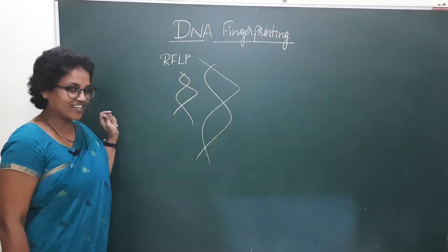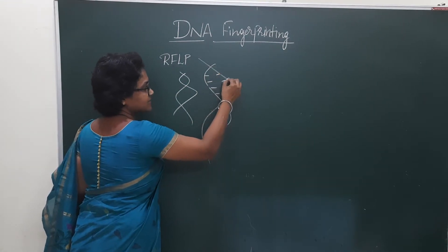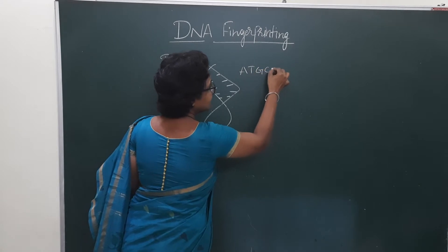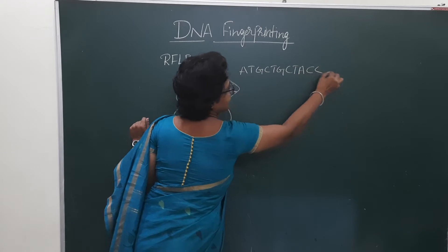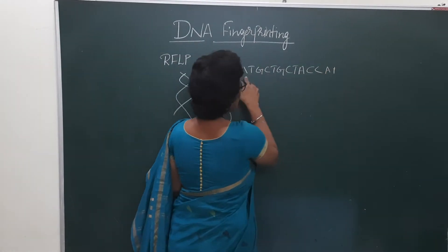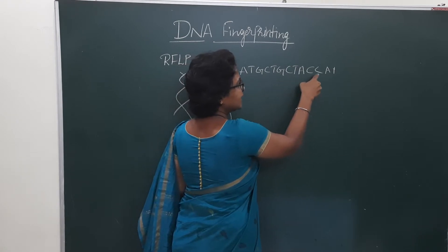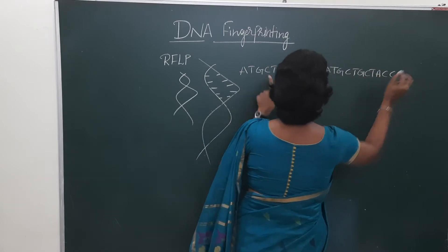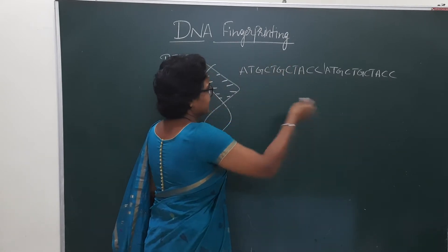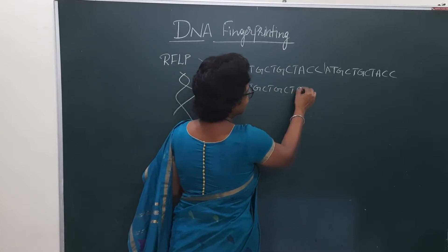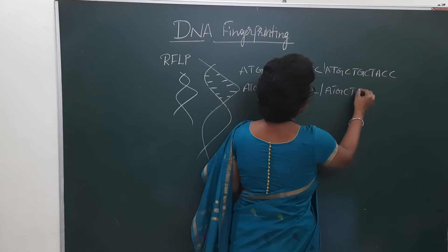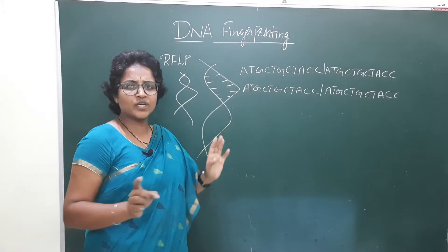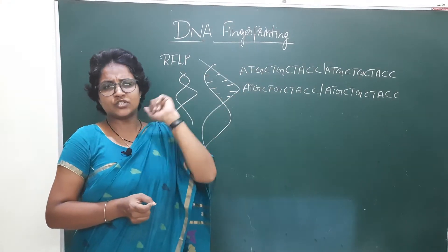These are the nitrogenous bases. The sequence is ATGCTGCTACC — and this same sequence ATGCTGCTACC is repeated multiple times. My dear students, this is the sequence I have taken as an example. These are the types of sequences which are repeated many times.